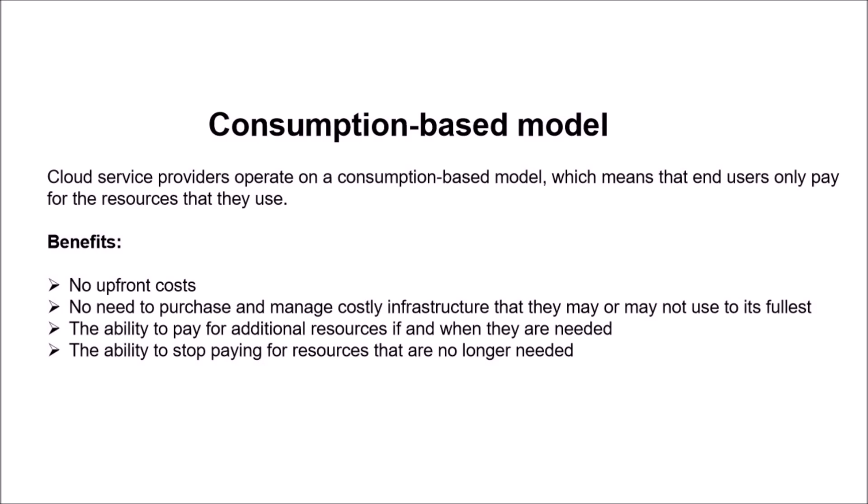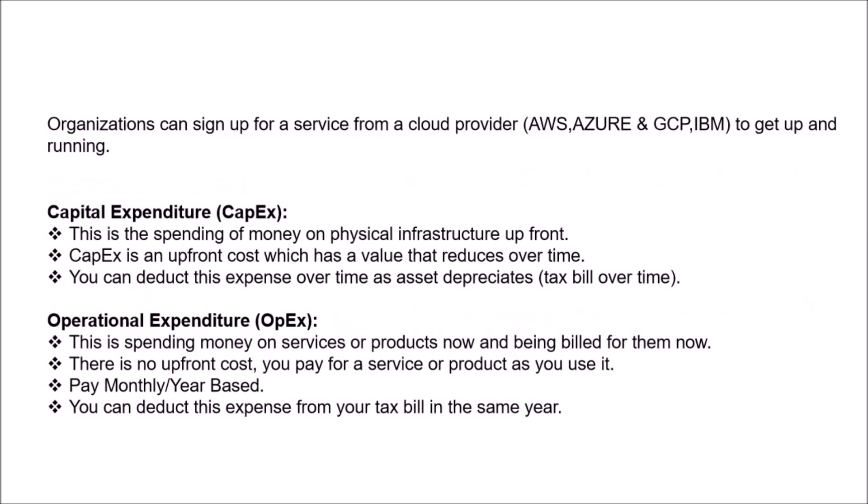You pay additional charges only when you use additional resources. And the ability to stop paying for resources you no longer need — imagine you bought a physical server and kept it in your data center but it's not being used. You might have to sell it at a 50 or 75 percent discount — that's a waste of money. With the consumption-based model, you pay only for what you are using.